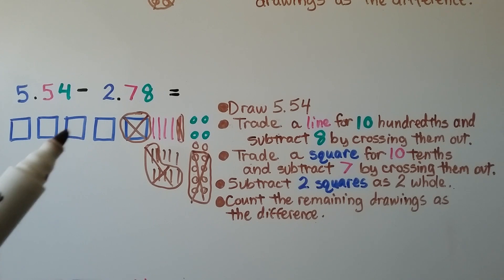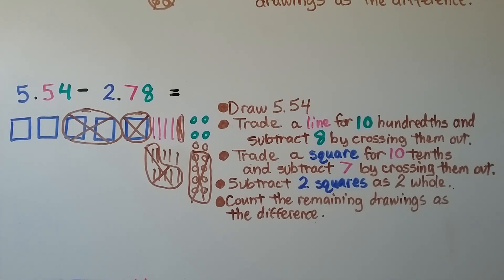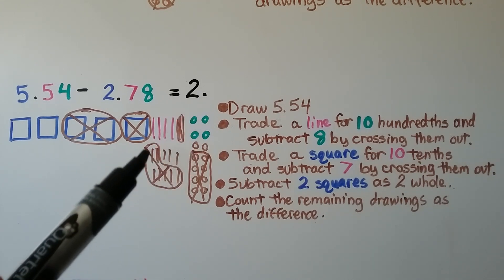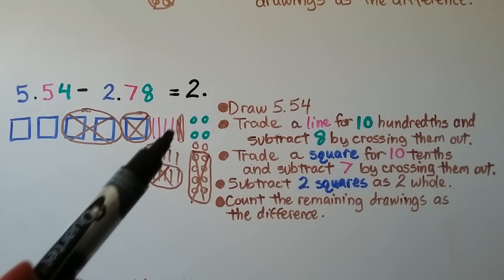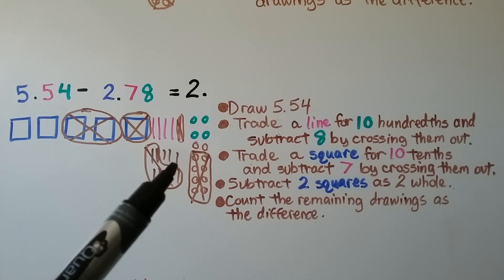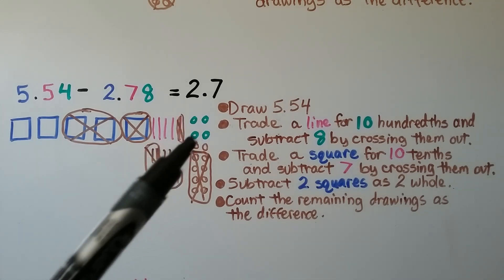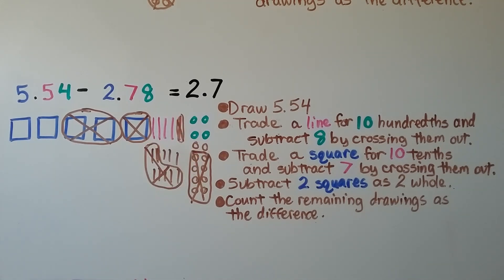We subtract 7 tenths and cross out 2 wholes. We count the remaining drawings as the difference. We have 2 wholes, 7 tenths, and 6 hundredths. The difference is 2 and 76 hundredths.